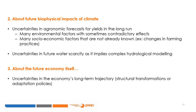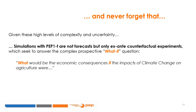Finally, the last source of uncertainty is about the future evolution of the economy. The economy's long-term trajectory is unknown, including its adaptation policies. Given these high levels of complexity and uncertainty, our last advice is that you should never forget that conducting simulations with the PEP1T is not a forecasting exercise. When interpreting your results, you should remember that your simulations are only ex ante counterfactual experiments, which seek to answer a complex 'what-if' question: what would be the economic consequences if the impacts of climate change on agriculture were as simulated?